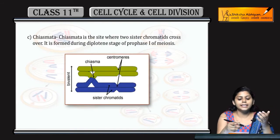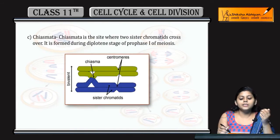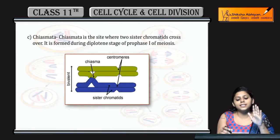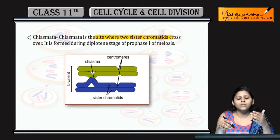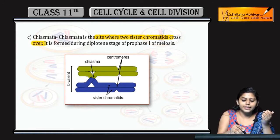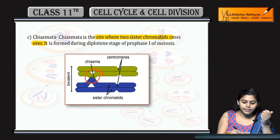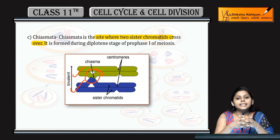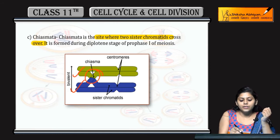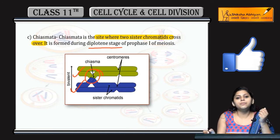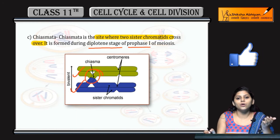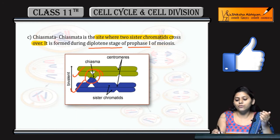Next is Chiasmata. Chiasmata is the site where two non-sister chromatids cross over. This is the site where two chromatids cross over — meaning they meet. It is formed during the Diplotene stage of Prophase I of Meiosis I.